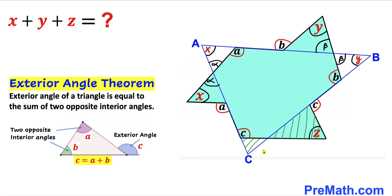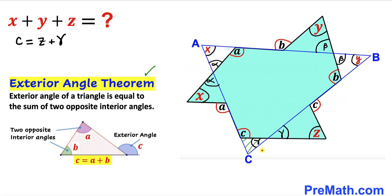Finally, let's focus on these two triangles. Let me call this angle gamma. Then this angle has got to be gamma as well, since they are vertical angles. Now we apply the exterior angle theorem once again — c is our exterior angle, and that is equal to the sum of these two opposite interior angles, so angle c equals angle z plus angle gamma. Therefore this angle has got to be angle z.